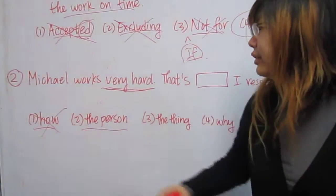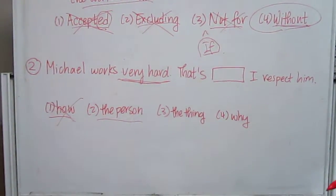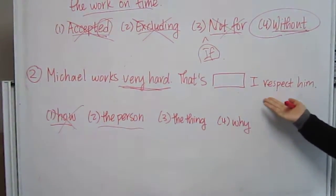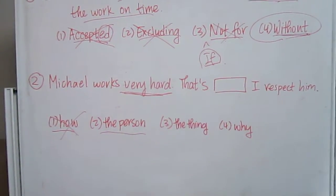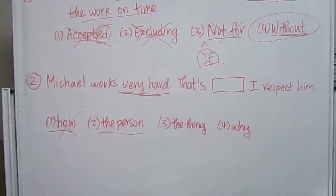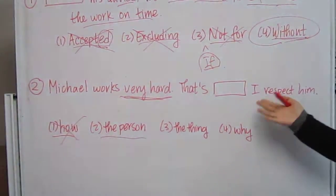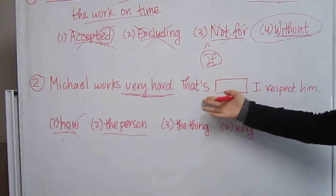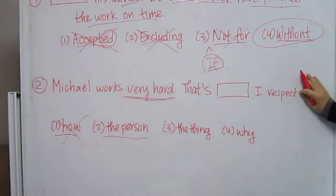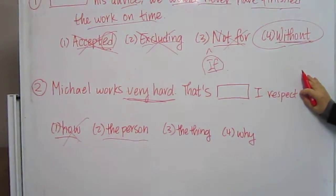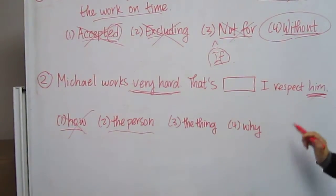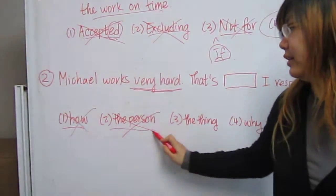Choice two, the person. If you wrote, that's the person, I respect him, you would be referring back to Michael two times. So the sentence wouldn't make sense. If this sentence says, that's the person I respect, it might have made sense. But the him is here. So you can't have it to be the person.